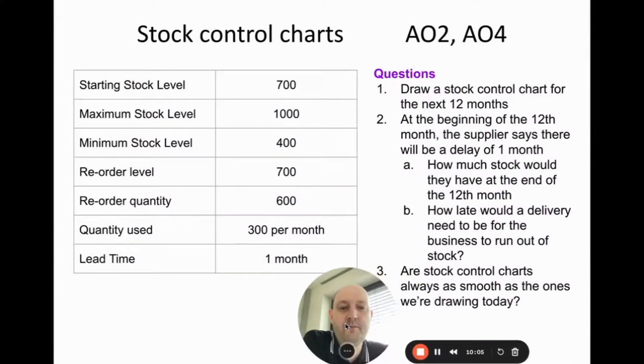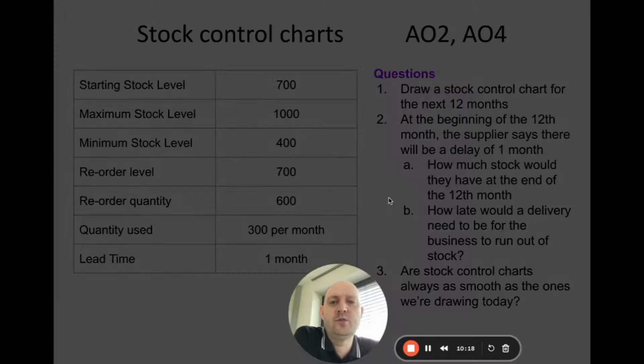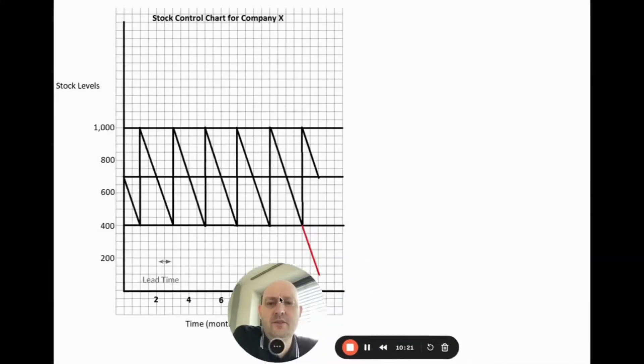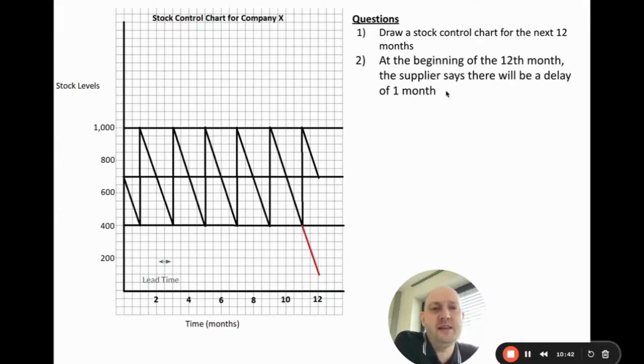Right, so here's another one. If you want to pause the video and have a go at this, then go for it and I'll go through the answers in a few seconds. Okay, what I've done here is I've drawn the diagram here. The diagram looks a little bit different but it's basically the same thing. We've got months on the x-axis. The first question was draw the stock control chart and I've done that. I realized I've forgotten to label the max, minimum, reorder level, so I would lose a mark here. So don't forget to do that.